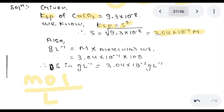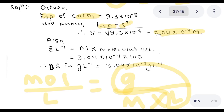When the mol per liter value is known, to get gram per liter we multiply by the molar mass. The molarity value is 3.018 × 10⁻⁴ mol per liter and the molecular weight is 100. So the solubility in gram per liter is 3.018 × 10⁻². The correct answer is 3.018 × 10⁻².